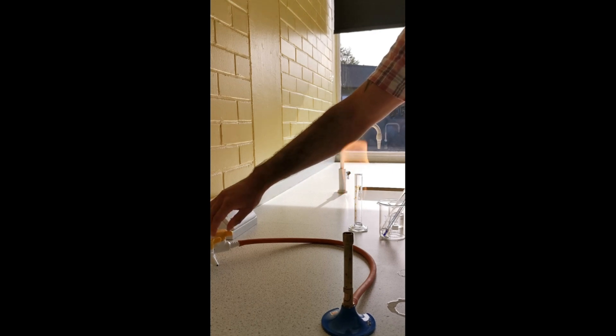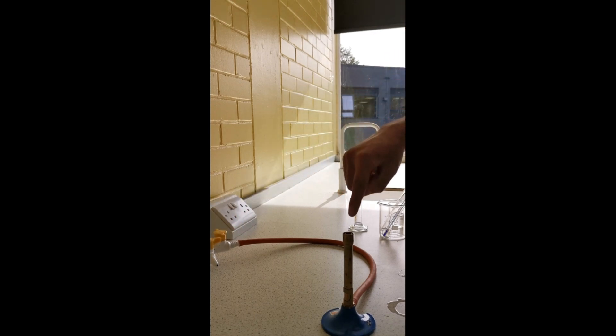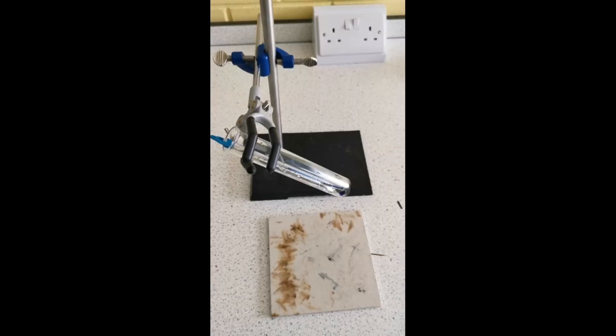When you turn your Bunsen burner off, once again make sure your face is not above it. This right now is going to be extremely hot. It's metal, remember, so I'm not going to grab this. I'm going to wait for it to cool down before I put it away.